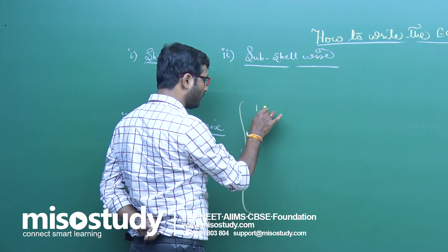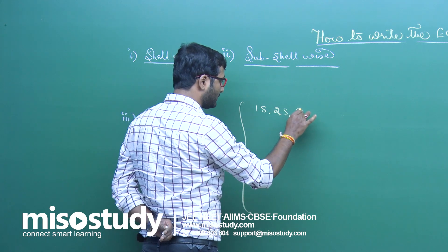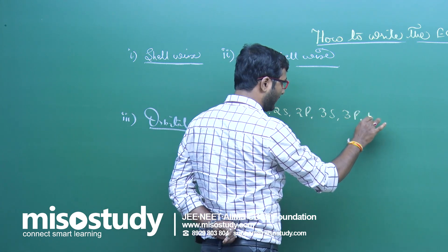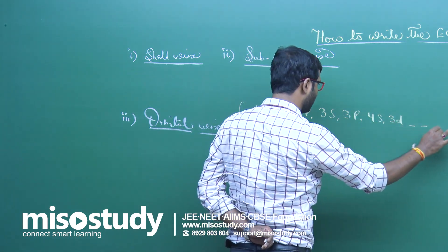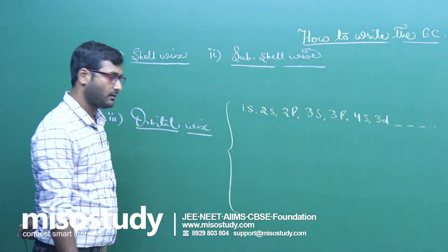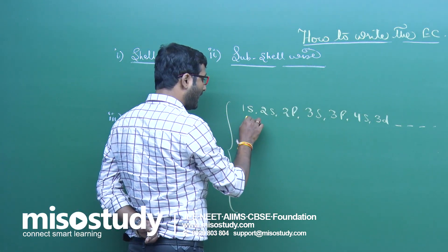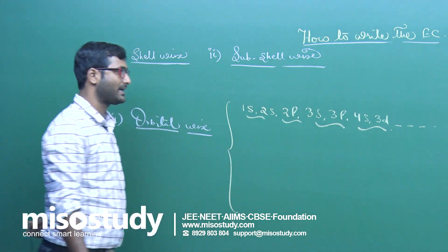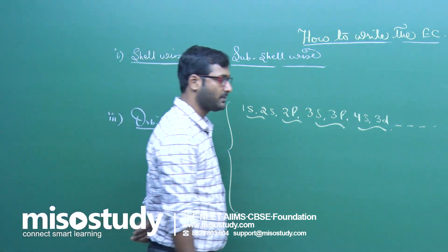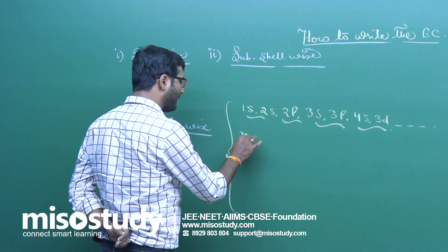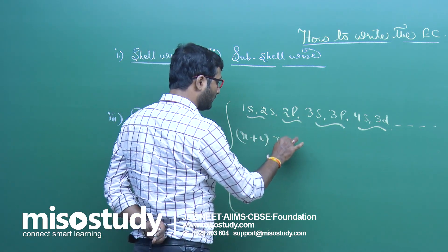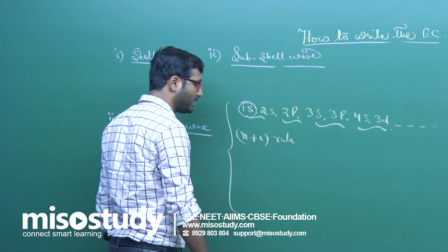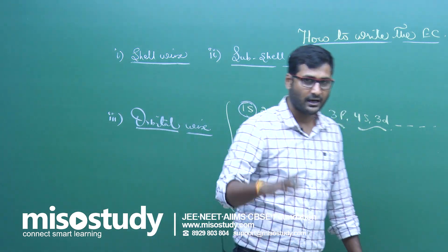For example, starting from 1s, 2s, then 2p, then 3s, then 3p, then 4s and 3d. To find why 1s has low energy: we have the n+l rule. For any sub-cell, the one having the smallest value of n+l will have the lowest energy, and the electron will go first into that sub-cell.